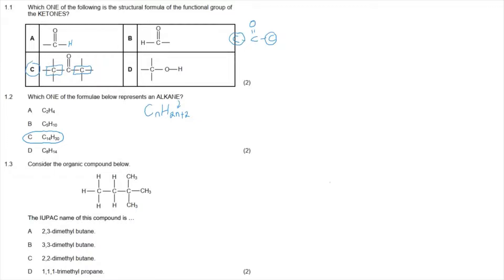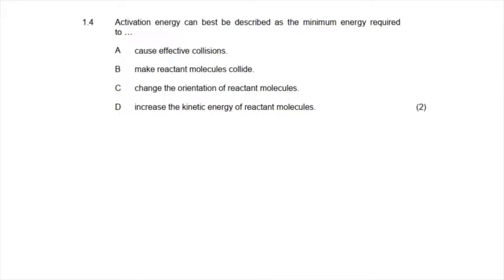Question 1.3 asks for the IUPAC name of the organic compound shown. The longest carbon chain is four carbons, making the main chain butane — so the answer is either A, B, or C. There are two methyl branches, making it a dimethyl, and both methyl branches are on the second carbon, numbering from the side that gives the smallest number. We are looking for 2,2-dimethylbutane, so the correct answer is option C.